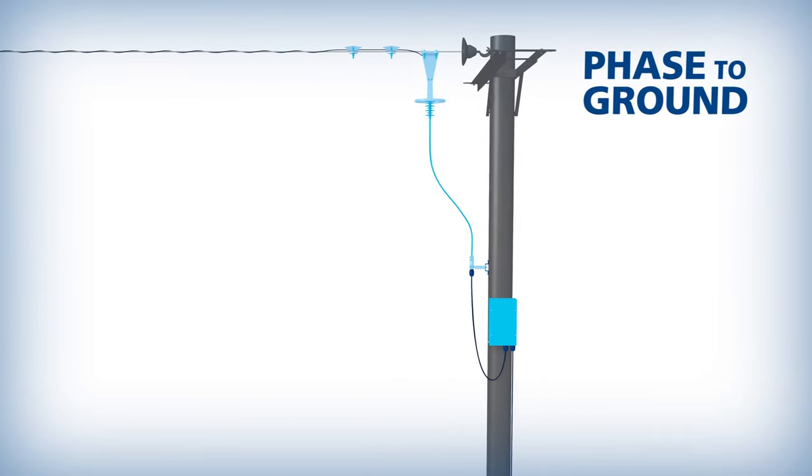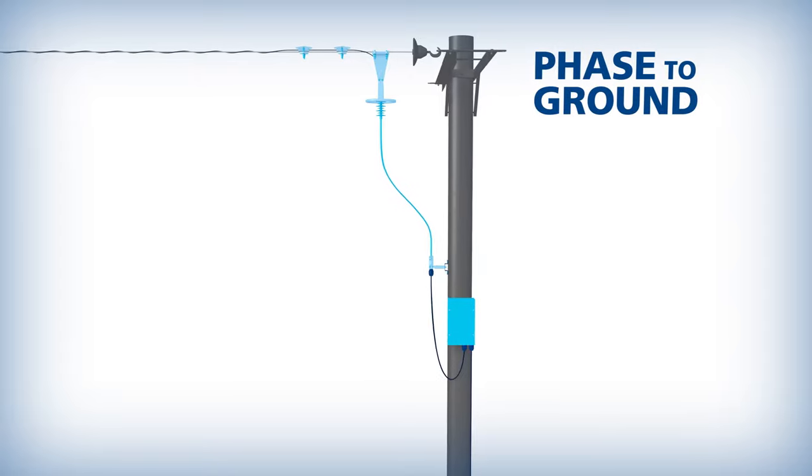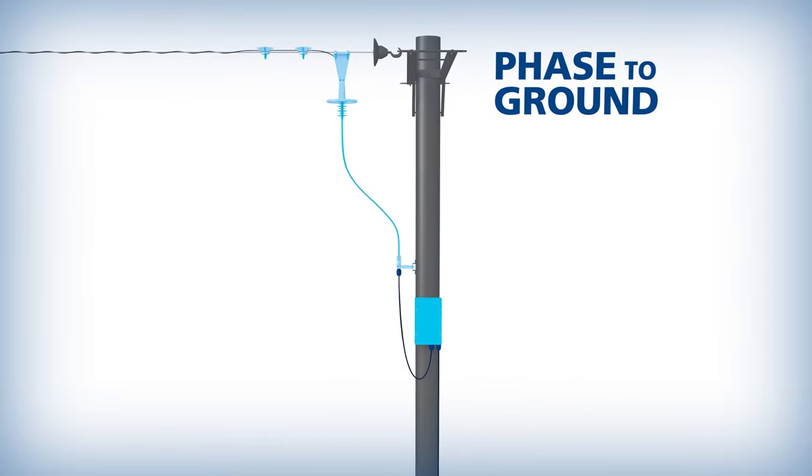Where access to joint locations or terminations are required, novel insulators allow the cable to be brought safely down the pole to ground level.